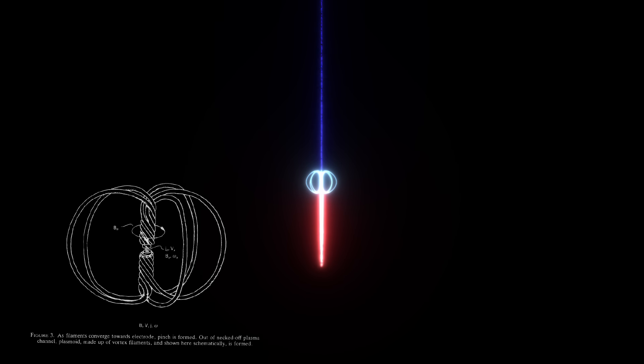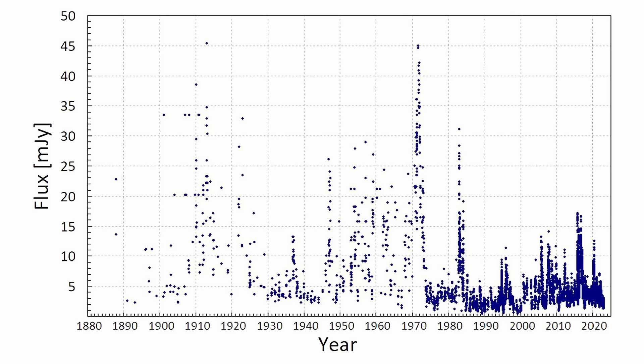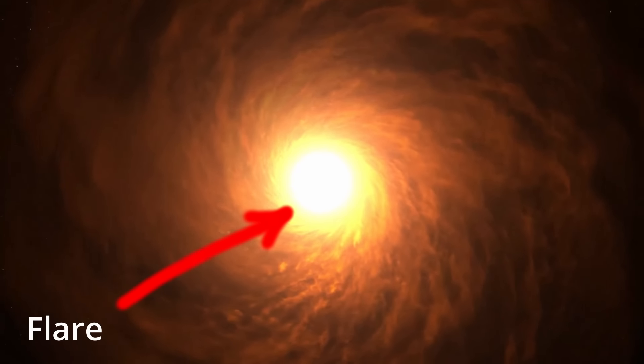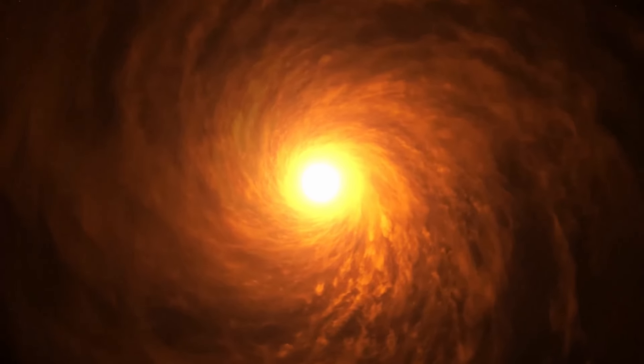Reconnection events also lead to flare events in AGNs. Flares are characterized by sudden increases in brightness across different wavelengths, such as optical, x-ray or gamma. The energy released during a reconnection event can manifest as an increase in emissions from the AGN, which is observed as a flare.